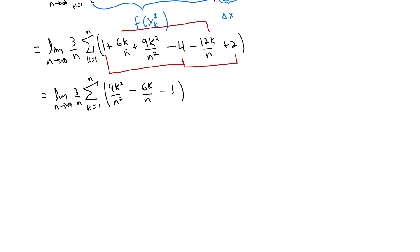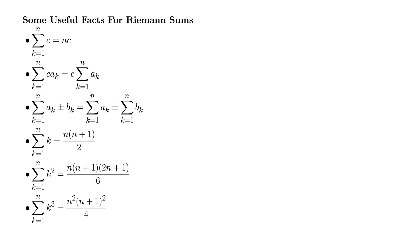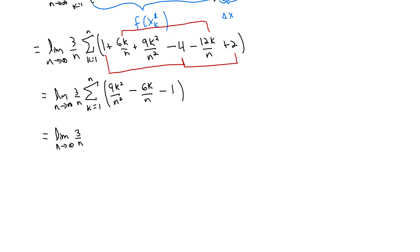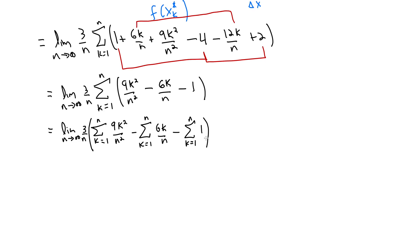Let's recall some useful facts about Riemann sums. These are facts that you should essentially have internalized about Riemann sums, or at least be working on internalizing them. We'll start out by using this one that tells us that we can break up one big sum into a bunch of smaller sums essentially across plus or minus. So we still have our limit as n goes to infinity and 3 over n, and then we'll just break this up into smaller sums. So we have the sum of 9k squared over n squared, minus the sum of 6k over n minus the sum of 1.